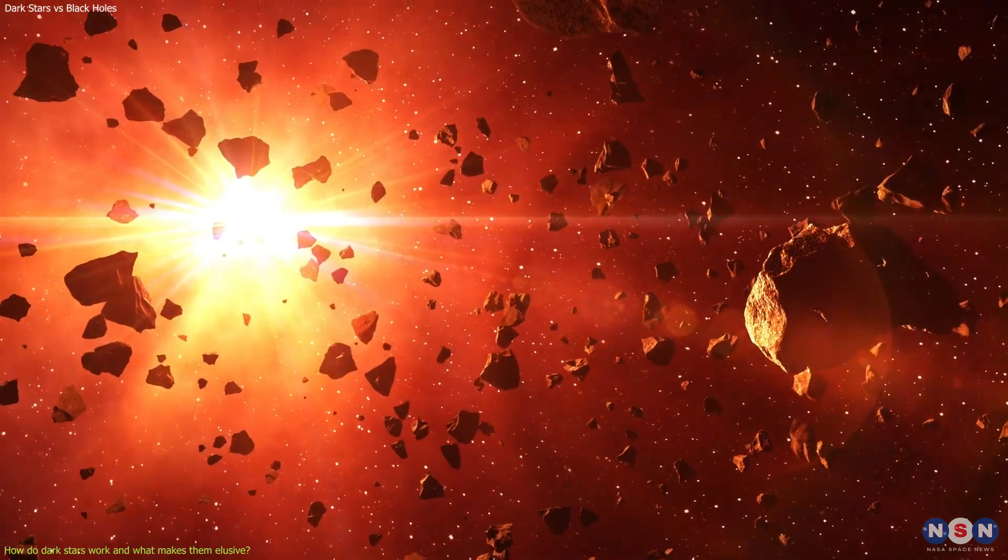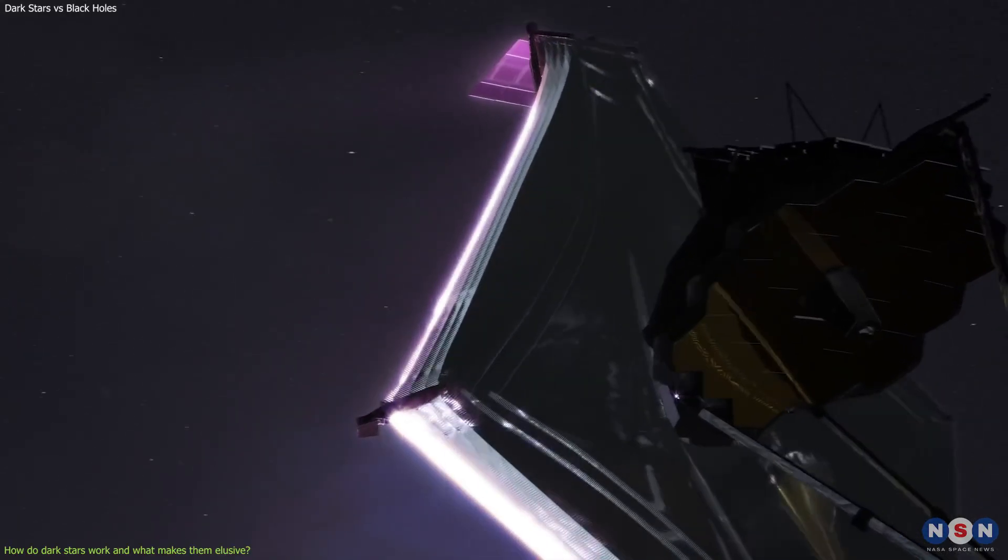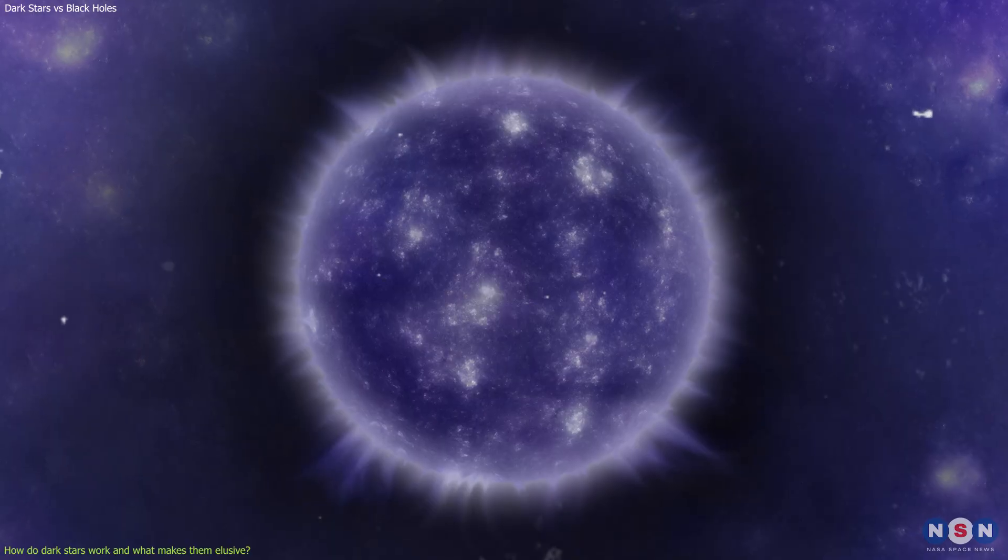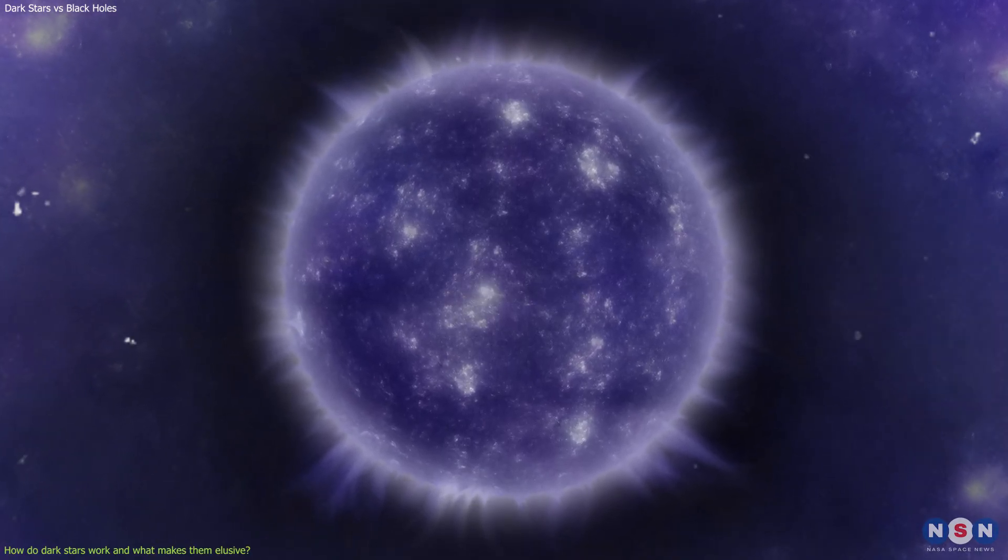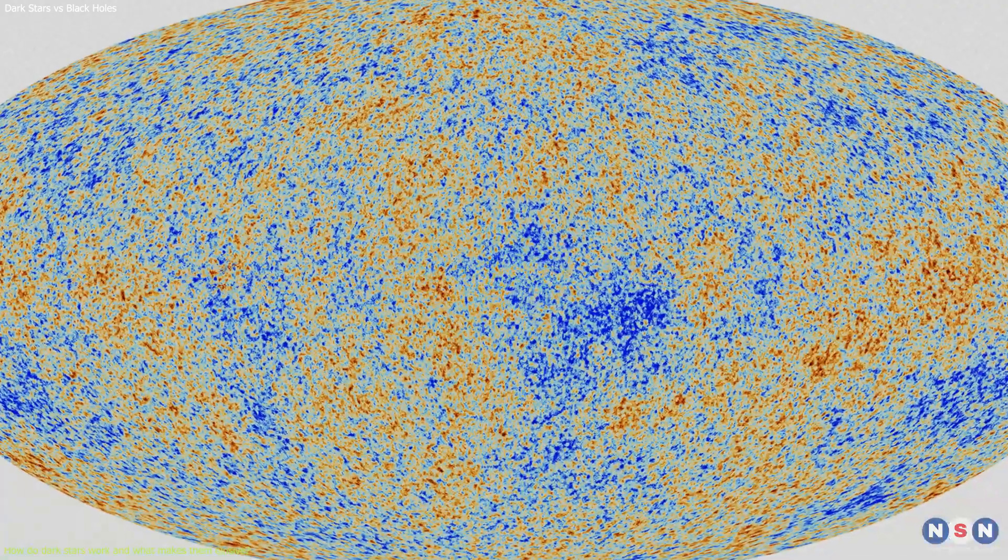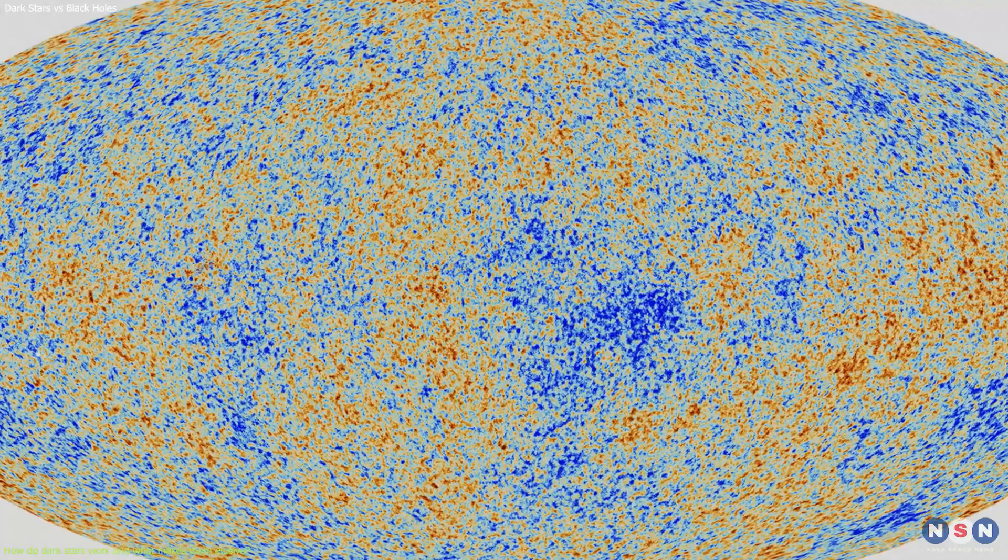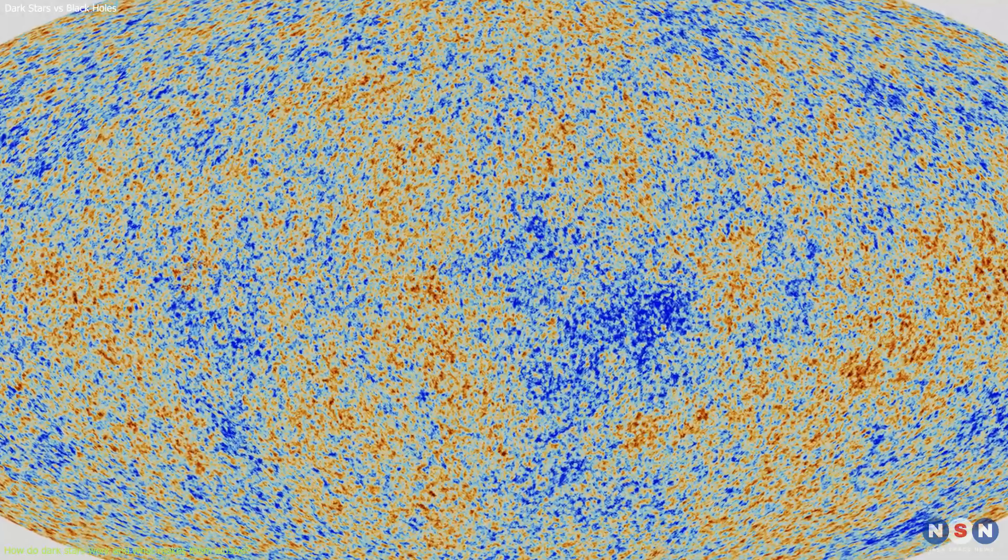The redshifted radiation makes dark stars very faint and cold, which makes them invisible to most telescopes. The surface temperature of a dark star is about 10 to the power of minus 7 kelvins, which is much colder than the cosmic microwave background radiation, which is about 2.7 kelvins.